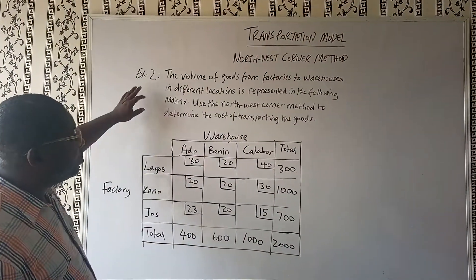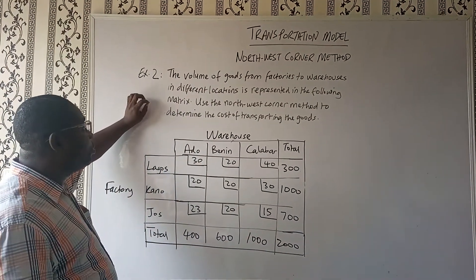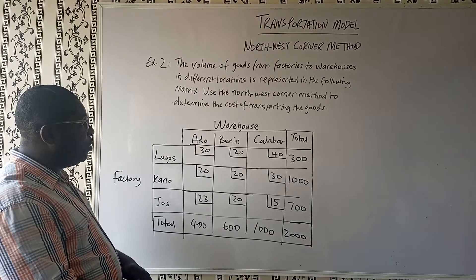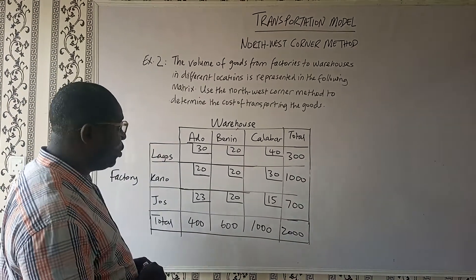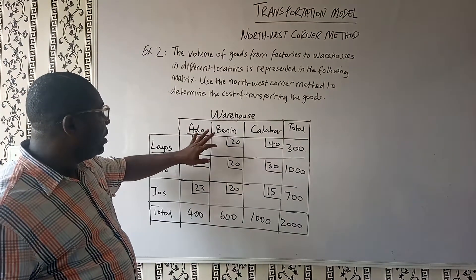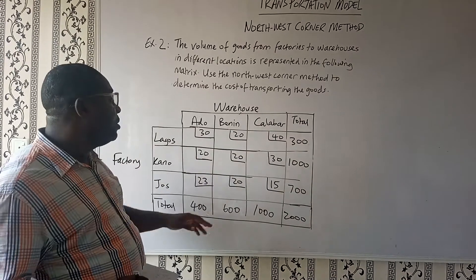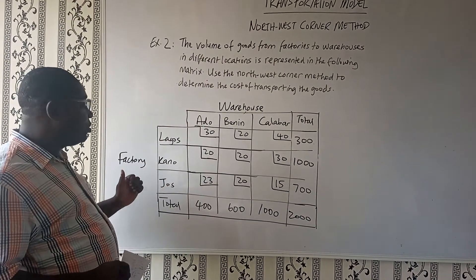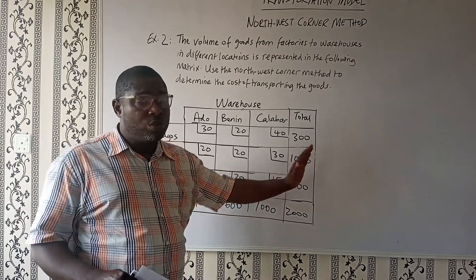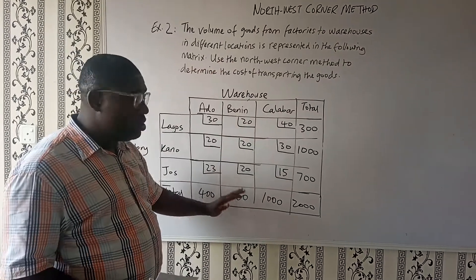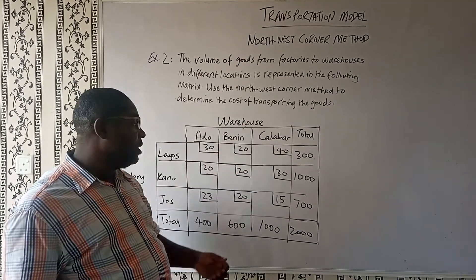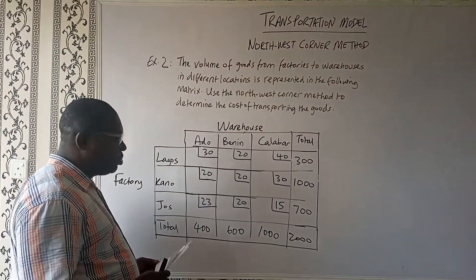Let's look at what we have on our board. We have the North West Corner method and example two. The volume of goods from factories to warehouses in different locations is represented in the following matrix. Using the North West Corner method to determine the cost of transporting the goods. We have warehouses in Ado, Benin, and Calabar, and factories in Lagos, Kano, and Jos. The supply function is placed on the rows and the demand on the columns, so factories represent supply and warehouses represent demand.